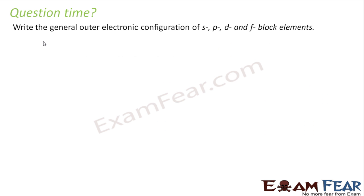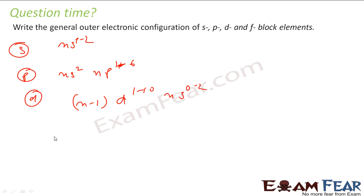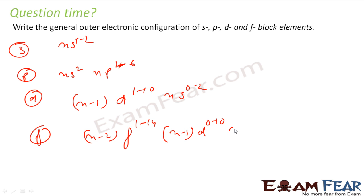Write the outer electronic configuration from s, p, d, f block. For s-block it is ns¹ or ns². For p-block: ns² np¹ to np⁶. For d-block: (n-1)d¹ to d¹⁰, ns⁰ to ns². For f-block: (n-2)f¹ to f¹⁴, (n-1)d⁰ to d¹⁰, ns².